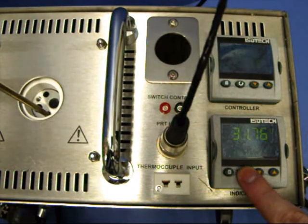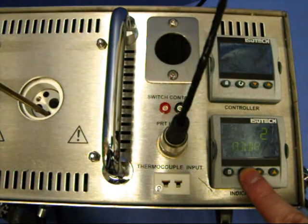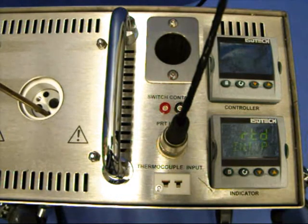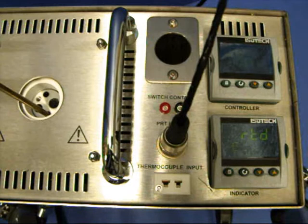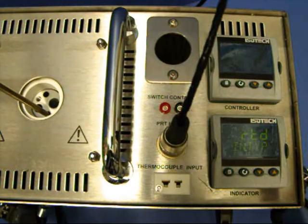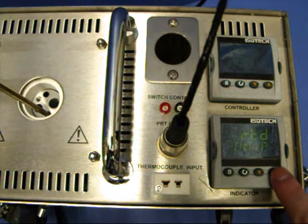The desired sensor type is easily set. Simply press the scroll key until the lower display indicates IN TYPE. The upper display will now show the current set sensor type. The indicator allows you to choose between a range of resistance thermometers and thermocouples. This is done by pressing the up and down keys.